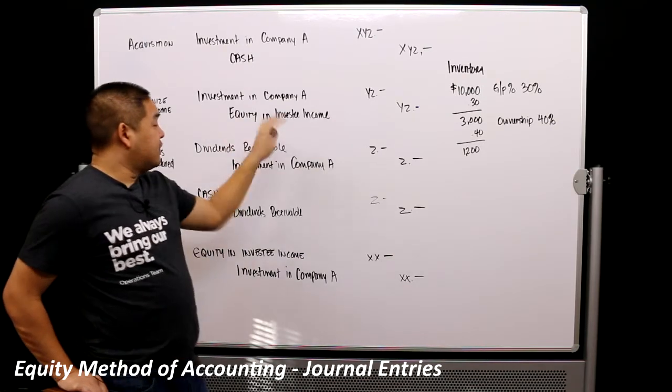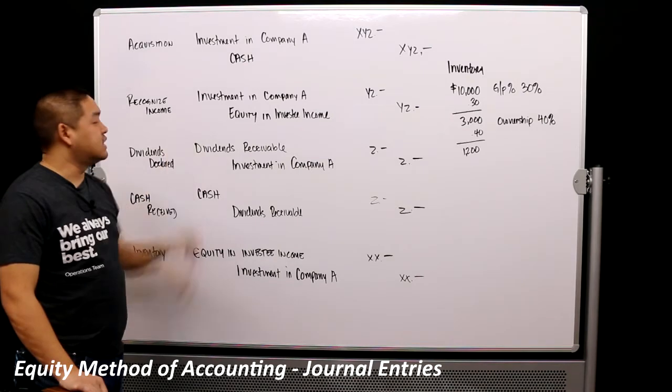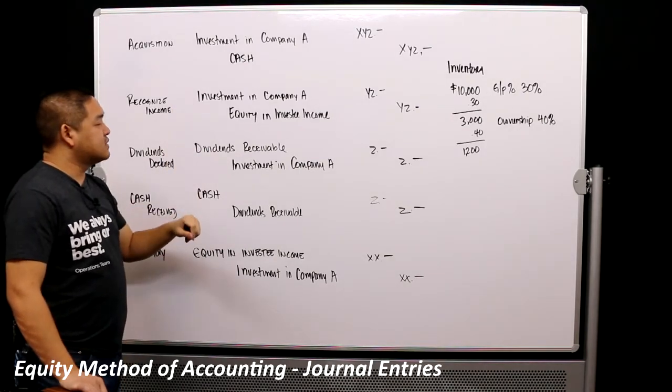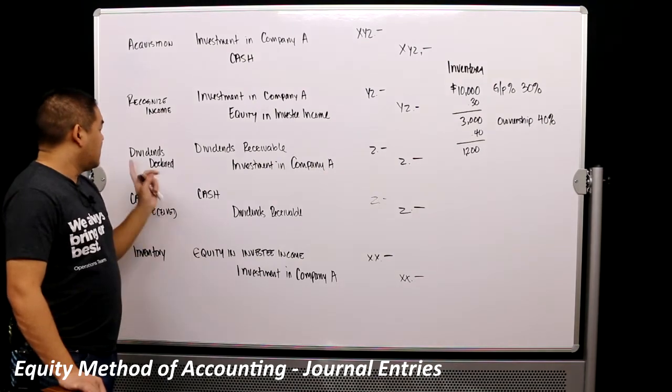Alright, next, before we go on to dividends received, if it was a loss, we would just switch those, and then you would have debit equity investee income, credit investment in Company A.